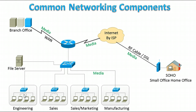Starting from the bottom, there are different department users. They are connected to the switch using the network interface card, called NIC, and they may be using Cat5 or Cat6 cable — category 5 or category 6 cable. This network interface card has a burned-in address called a MAC address.